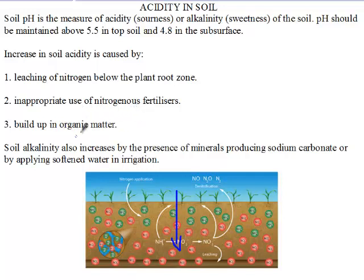The buildup of organic matter — such as waste, animal and plant materials — can also raise acidity. These waste materials normally contain nitrogen, and so their presence in the soil will raise up the acidity of the soil.